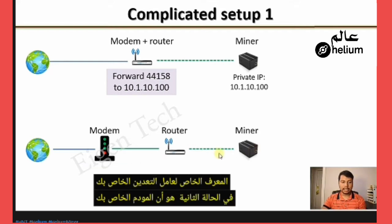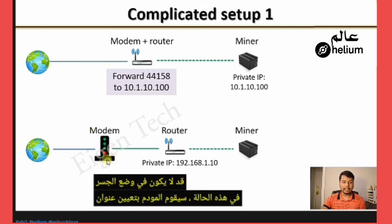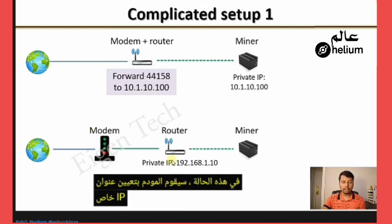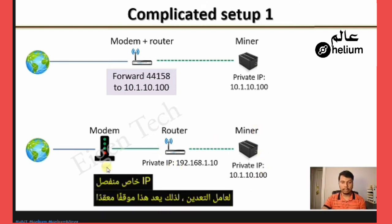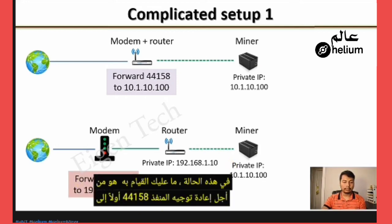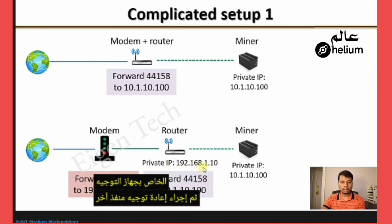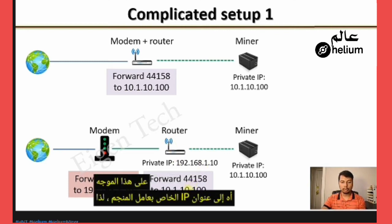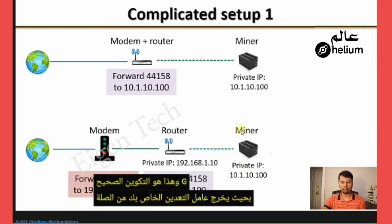The second situation is if your modem is not in bridge mode. In that case, the modem assigns a private IP to the router, and the router assigns a separate private IP to the miner. This is a complicated situation. You need to forward port 44158 first to the private IP address of the router using the modem, and then perform another port forwarding on that router to the private IP address of the miner — this is a double port forwarding configuration.